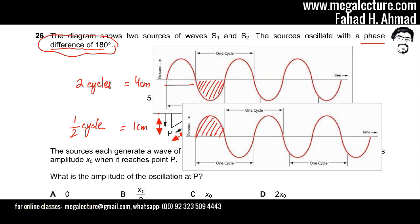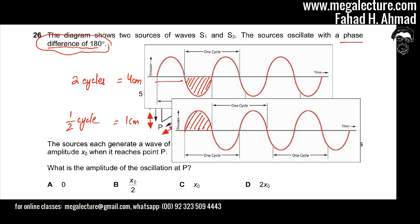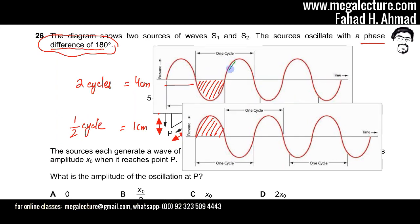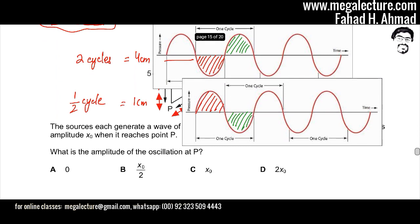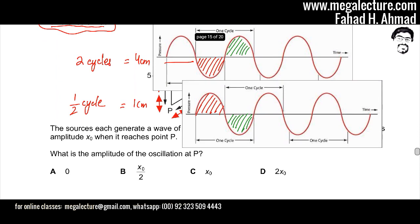The same happens throughout: wherever one wave has a positive amplitude (crest), the other has a negative amplitude (trough). When added together, the result is zero. So the correct answer is option A, which is zero.